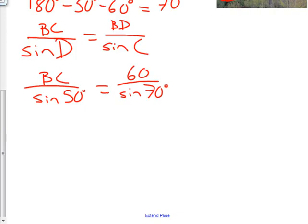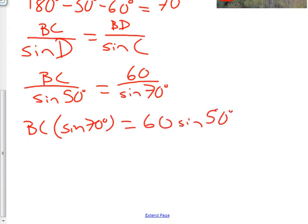Okay, so now I need to try to solve for BC. To do that, I'm going to cross multiply, so BC times sine 70 is equal to 60 times sine 50 degrees. So now I can divide by sine 70 on both sides.